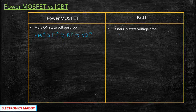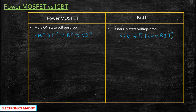Whereas in IGBT, the voltage drop will be lesser in comparison with the power MOSFET because it has some characteristics of power BJT. Remember this point — that is why the on-state voltage drop is comparatively lesser with respect to a power MOSFET.